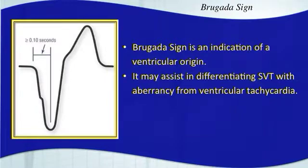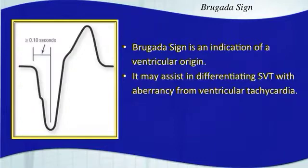If the intrinsicoid deflection is longer than 0.10 seconds, you call it Brugada sign. The Brugada brothers are a couple of EKG experts — they've really come out with a lot of research. You may have heard of Brugada syndrome, which we'll talk about with 12 leads. Brugada sign is one of those things that helps you differentiate a supraventricular rhythm with aberrancy from a ventricular rhythm.